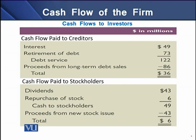Cash flow paid to stockholders is a net amount of $6 million. This results from dividend payment and stock repurchase totaling $49 million, while the firm raised $43 million from a new stock issue, leaving a net payment of $6 million to stockholders. In total, the firm paid $36 million to creditors and $6 million to stockholders, giving a total of $42 million paid to its fund providers.